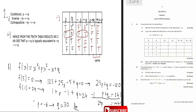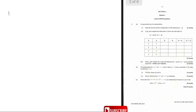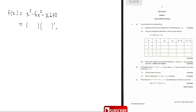Now factorize f(x) completely. With our values, f(x) = x³ - 6x² - x + 30. We already know x - 5 is a factor, so we need two more linear factors. Instead of polynomial division, we'll use sums and products of roots.